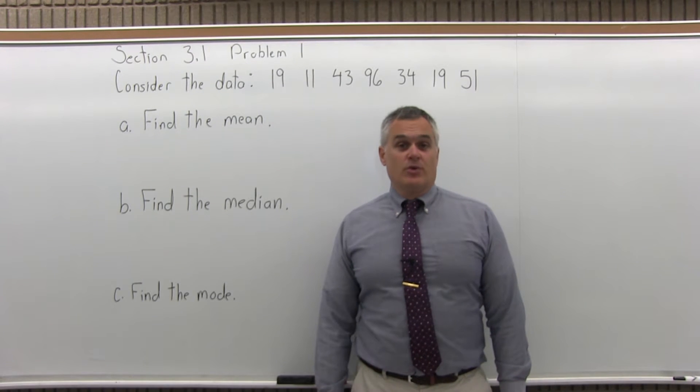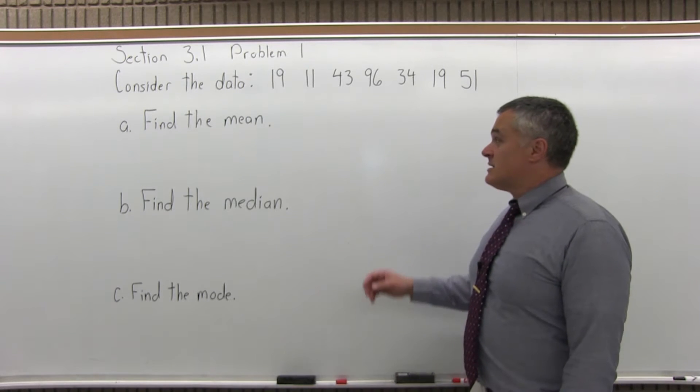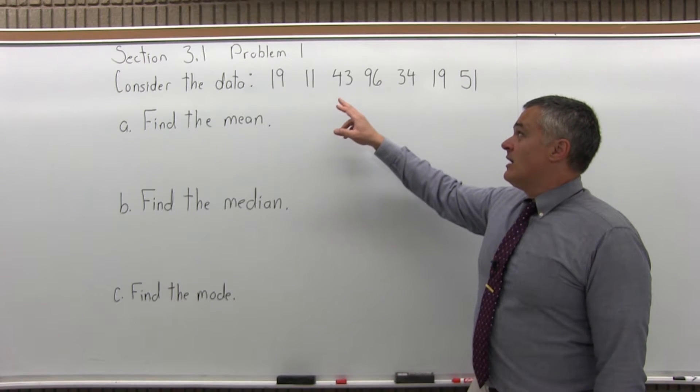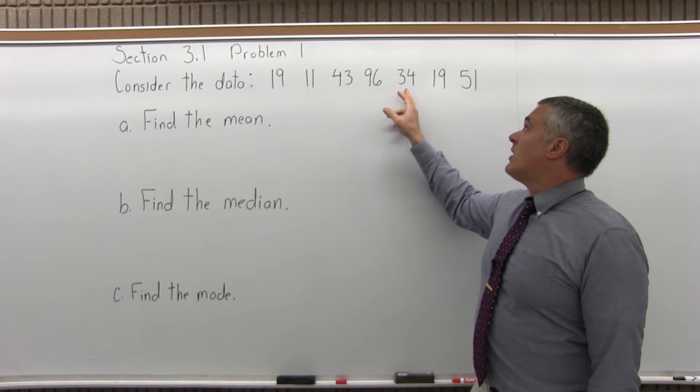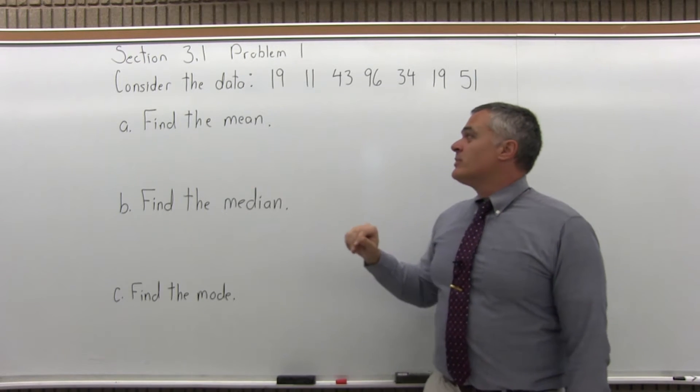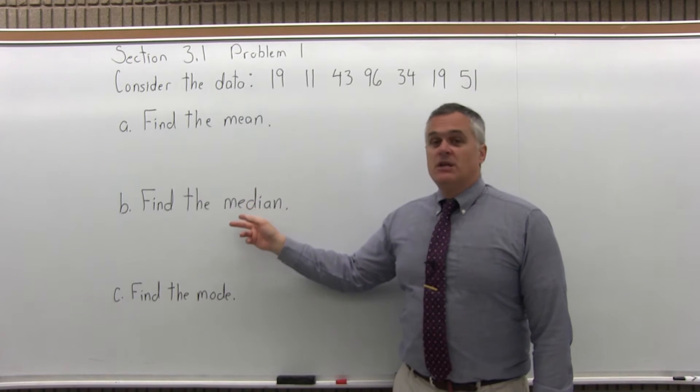This is Section 3.1, Problem 1. It says, consider the data: 19, 11, 43, 96, 34, 19, and 51. Find the mean, find the median, and find the mode.